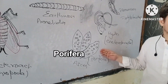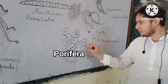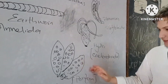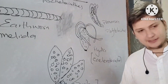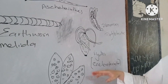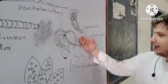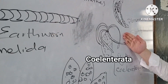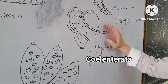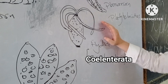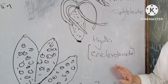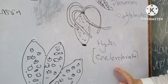This is Porifera, which has small sponges, and its specimen name is Ascon. The other is Hydra, which we studied in both first year and second year. It belongs to phylum Cnidaria.